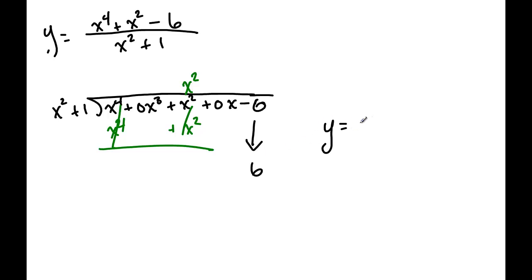So our slant asymptote is just equal to x squared, and that is our answer. Sometimes that happens when they all divide out, sometimes they get a little more complex, so it's just things you need to be aware of.